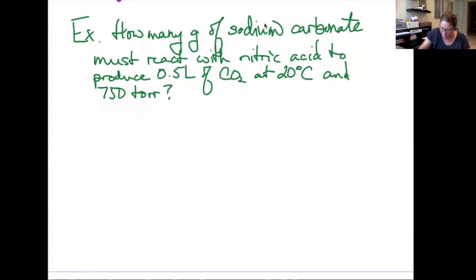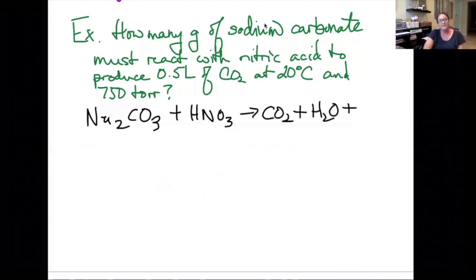First, I'm going to write my reaction. Sodium carbonate is Na2CO3. It's reacting with nitric acid. And this is an acid carbonate reaction. So my products are going to be CO2, H2O, and leftovers. And the leftovers in this case are going to be the sodium combining with the nitrate. Sodium is a plus one charge, nitrate is a minus one charge, so they combine as NaNO3.